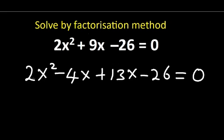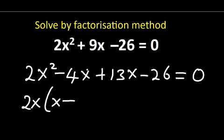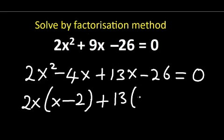We're going to find a common factor between 2x squared and negative 4x. The common factor is 2x, because 2x times x gives 2x squared, and 2x times negative 2 gives negative 4x. Next, the common factor between 13x and negative 26 is 13: 13 times x gives 13x, and 13 times negative 2 gives negative 26.